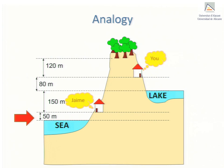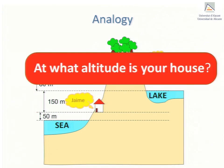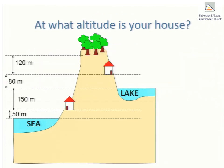Now, to get from your place to Jamie's, you'd have to traverse a difference in altitude of 230 metres. Based on the given information, at what altitude is your house located? This question can only be answered meaningfully if there is a fixed altitude to which all other altitudes are referred. Let's consider a number of possible reference altitudes. Your house is at an altitude of 80 metres above the lake. In this case, the surface of the lake serves as the reference or zero point of altitude.